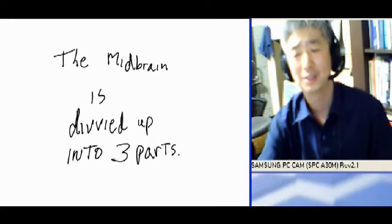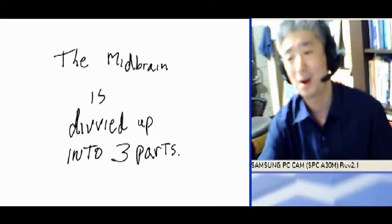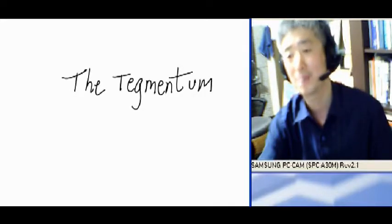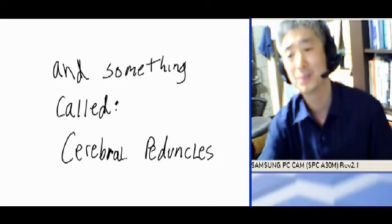The midbrain is developed into three parts. The tectum, the tegmentum, and something called the cerebral peduncles.